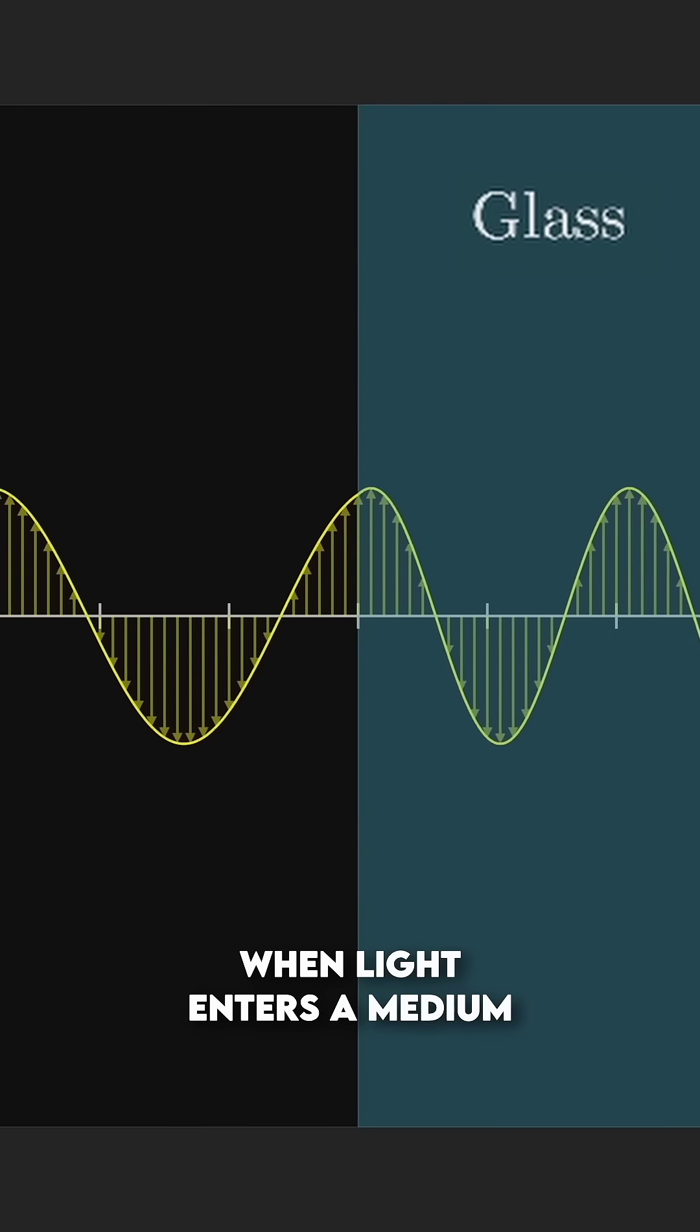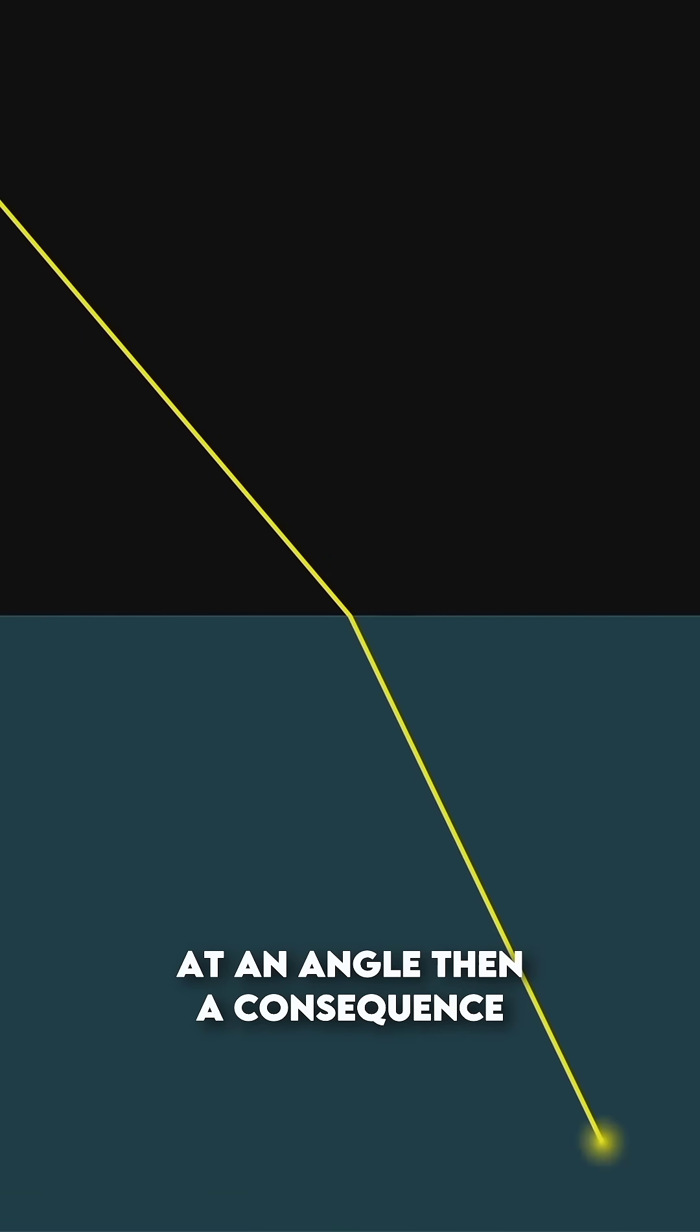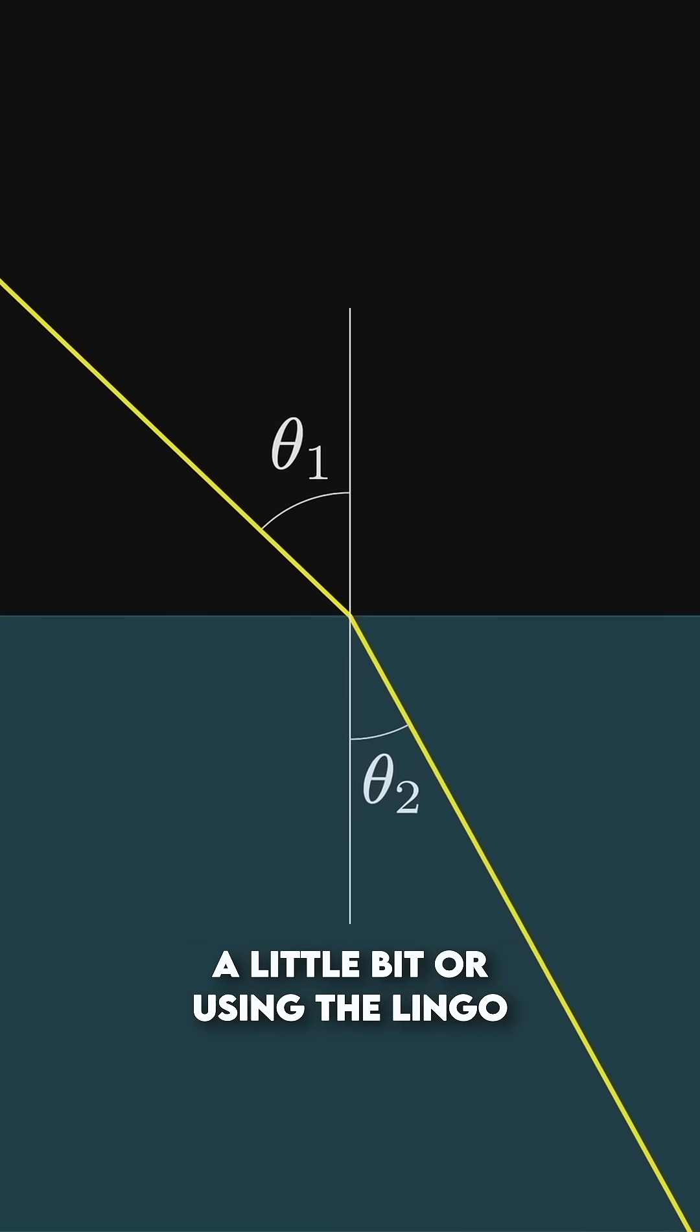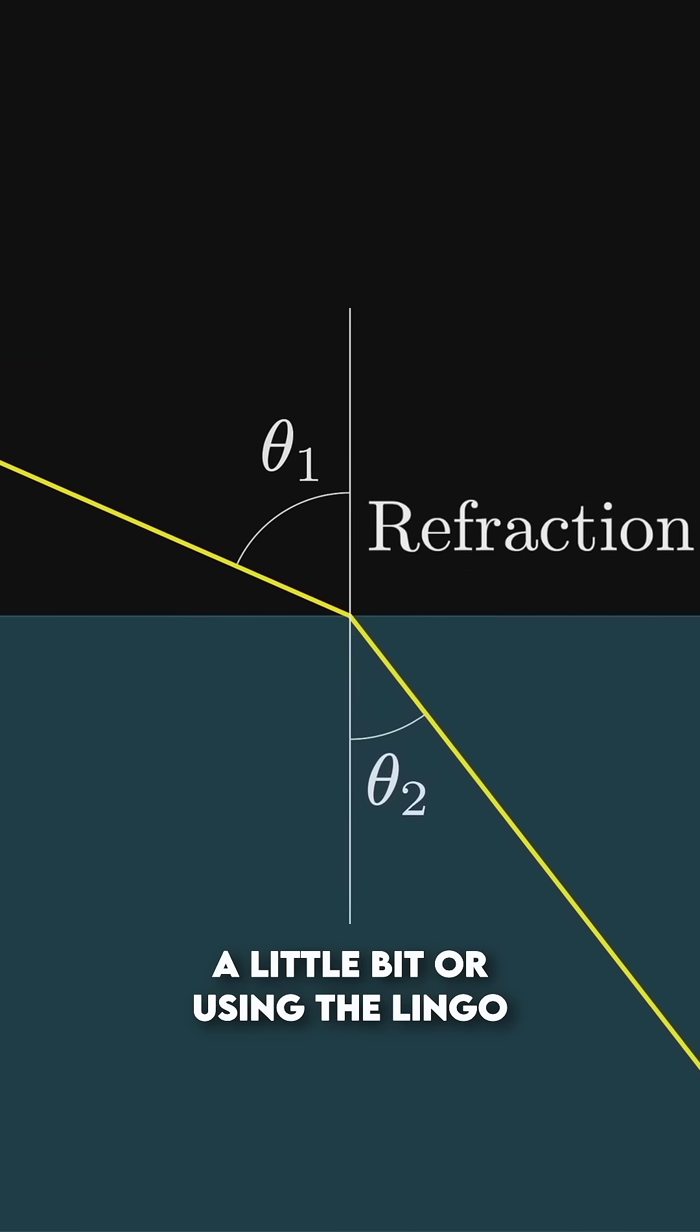When light enters a medium like glass, it slows down. If a beam of light enters this glass at an angle, then a consequence of this slowdown is that it bends a little bit. Or, using the lingo, it refracts.